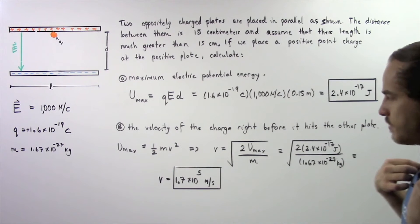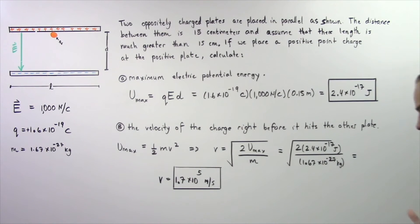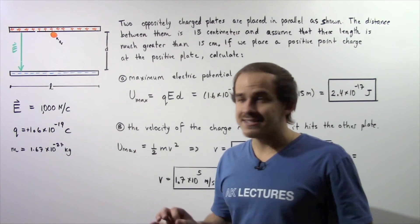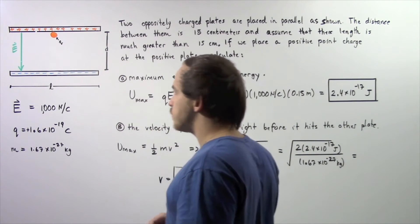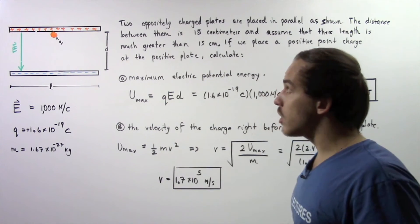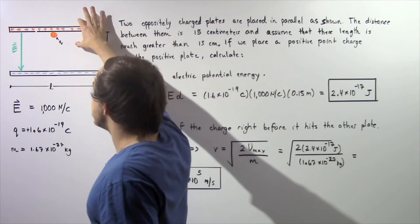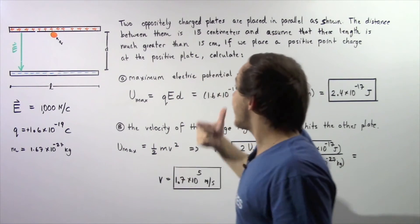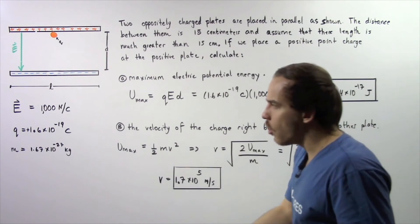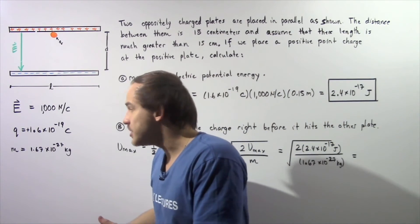Let's move on to part B. We want to find the velocity of our charge right before it hits this negatively charged plate. As our charge is traveling from the positive to the negative plate, its electric potential energy is being transformed into kinetic energy.